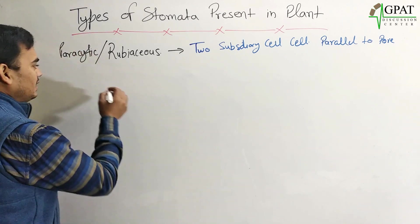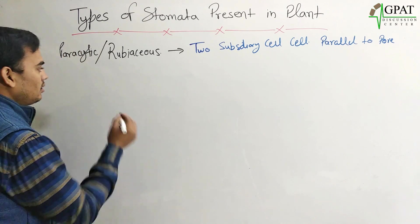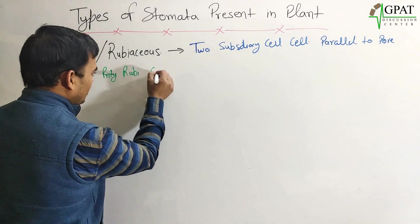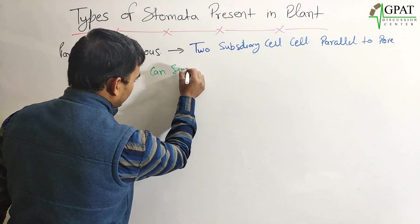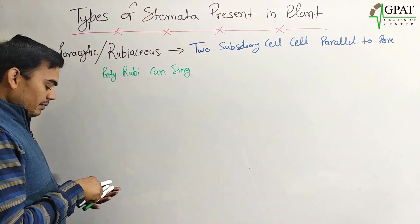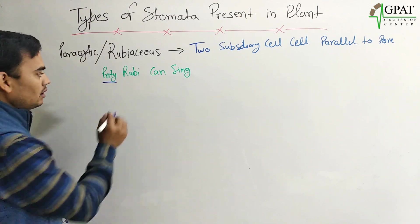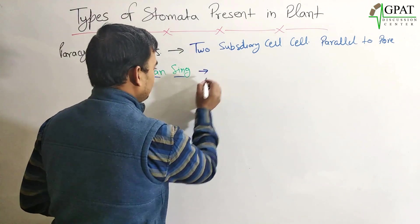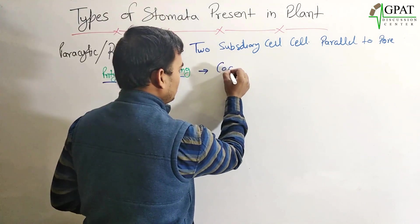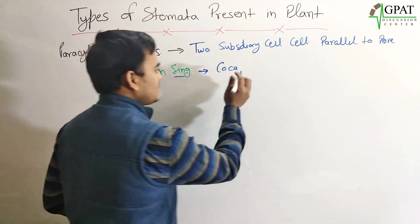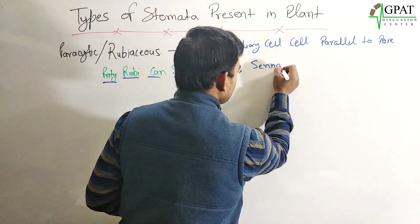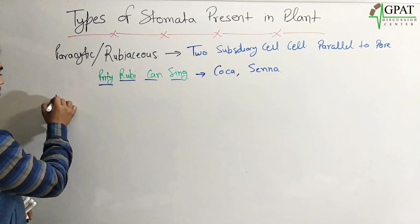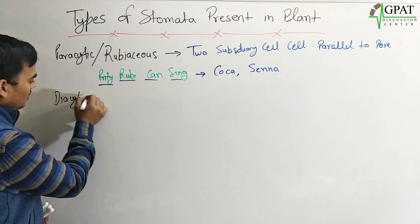Here is a trick so you can easily remember paracytic stomata: 'Pretty Ruby can sing.' Here, 'pretty' means parallel (P), 'Ruby' means Rubiaceous, 'can' stands for Coca, and 'sing' stands for Senna. So paracytic stomata is present in Coca and Senna.